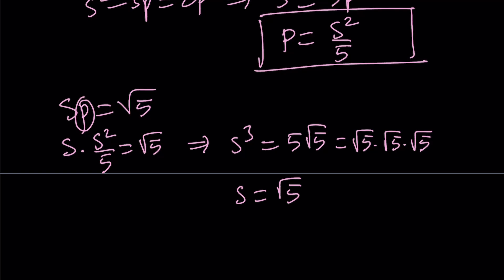So s is equal to √5. So what? I do need to find p. But p is given in terms of s. So p is s², which is 5 divided by 5, and that is equal to 1.